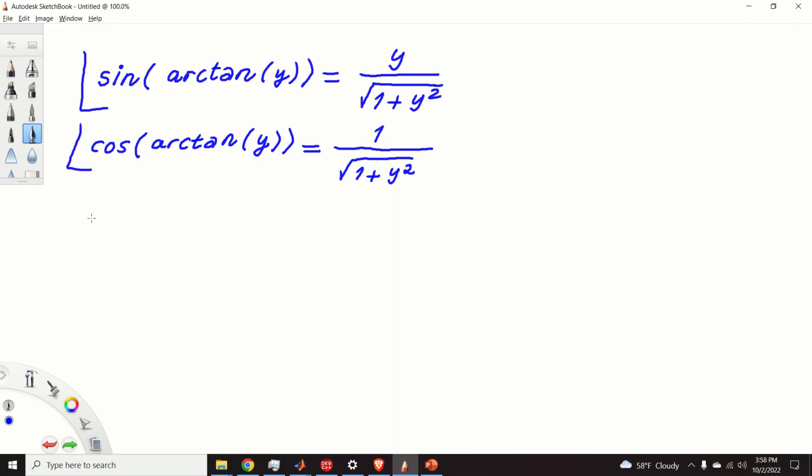The proof is very elegant, and with some modifications, this proof can be used to basically show that cos(arctan(y)) is equal to 1 over the square root of 1 plus y squared. So let's start with the proof.